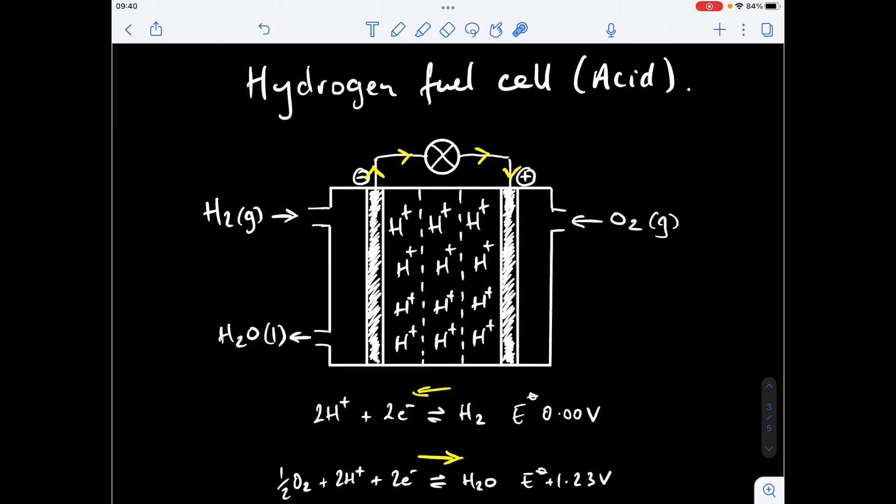If we move on to the other electrode, the oxygen electrode, the oxygen that's going to be coming in from the air like in a traditional combustion engine of a car is going to be fed in. It's going to hit the electrode, the positive electrode, and it's going to combine with the H+ ions that are in the electrolyte and it's also going to pick up those electrons that have come around the external circuit and generate water. You can see I've got water coming out of the cell as a waste product.